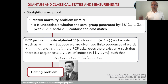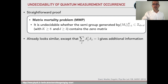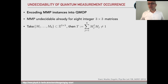From that one derives the undecidability of the matrix mortality problem. The small missing piece is that the constraint sum of A_j† A_j = I gives additional structure not present in the matrix mortality problem, but we can fix this easily. We need to encode matrix mortality instances into the quantum measurement occurrence problem. The matrix mortality problem is already undecidable for eight integer 3×3 matrices, so we take such an instance M1 to M8 and construct M_j† M_j, which in general will not be the identity.